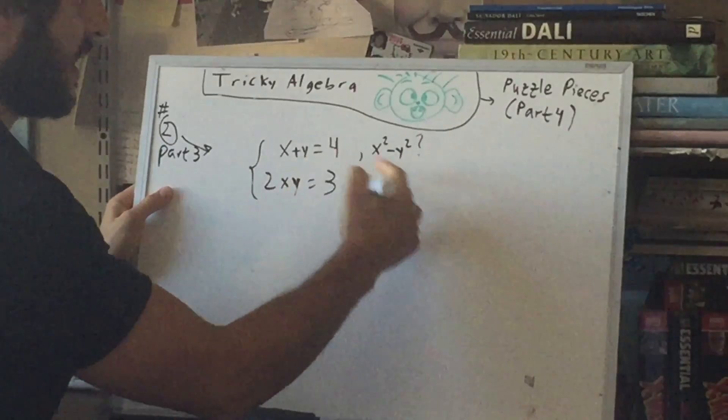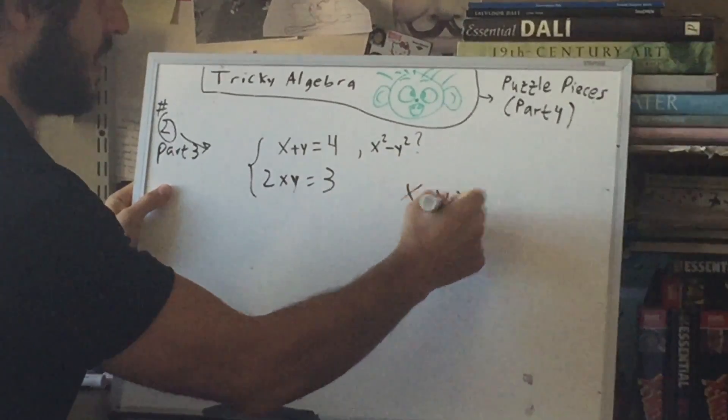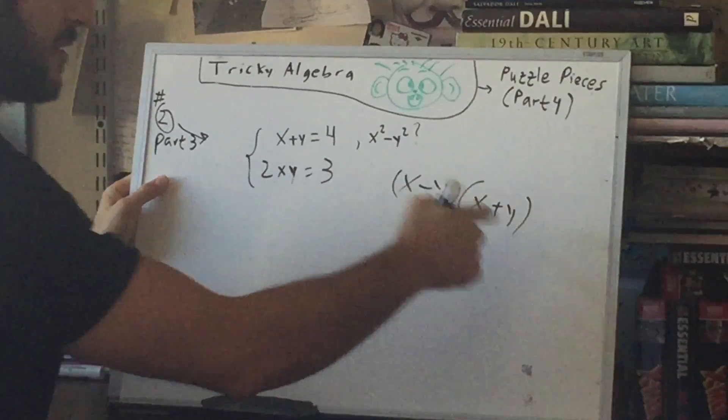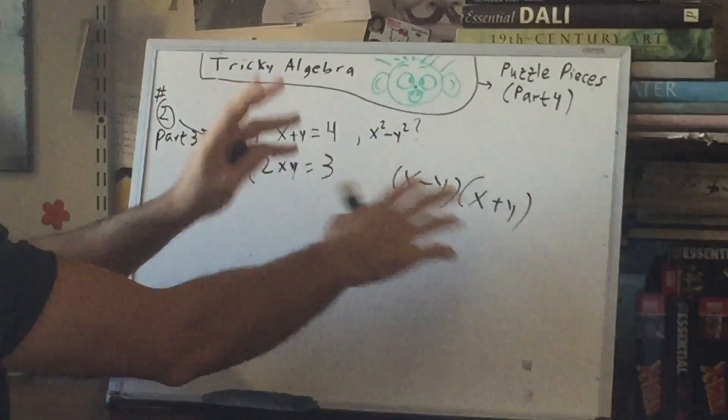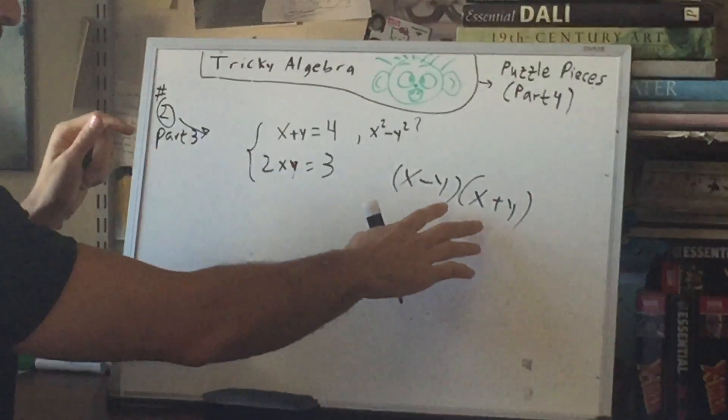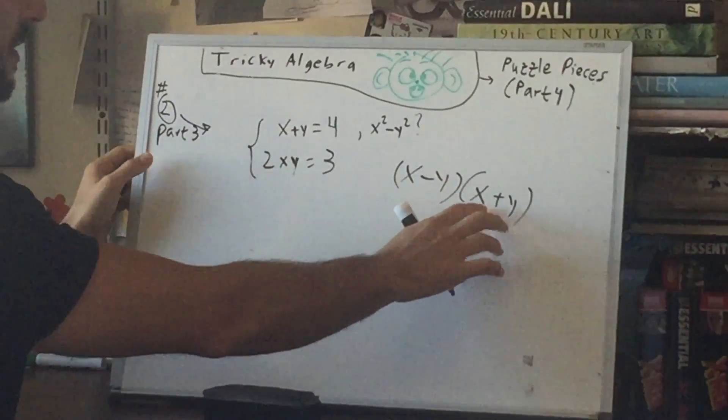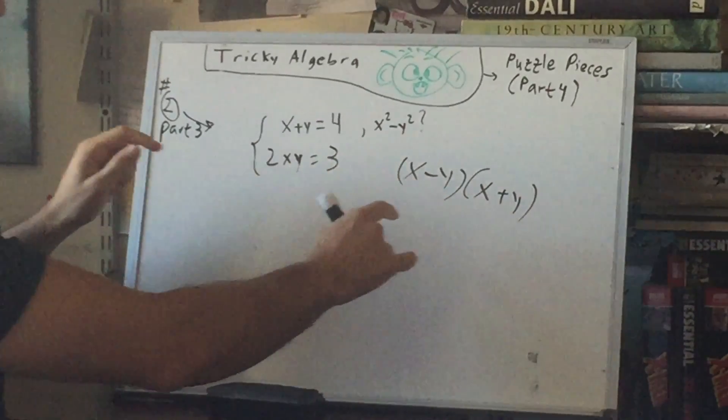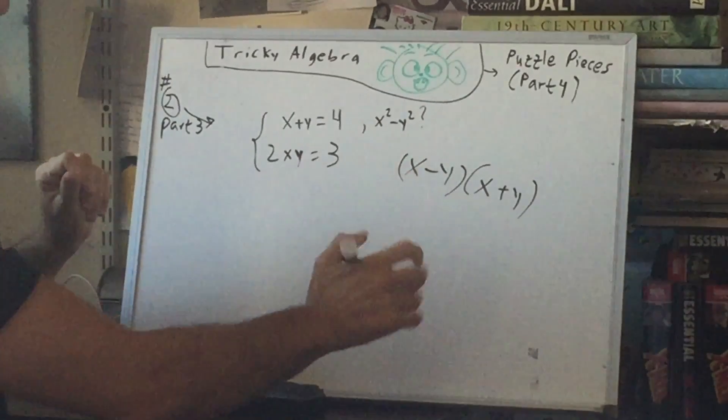So first of all we can factor x² - y² into (x-y)(x+y). That's a very standard factorization and if you guys are not comfortable, again review expanding and factoring. Now we already have x + y so the trick is going to be getting this x - y. We're gonna do that in a very roundabout way.